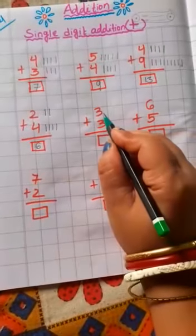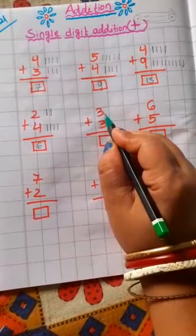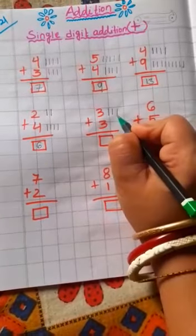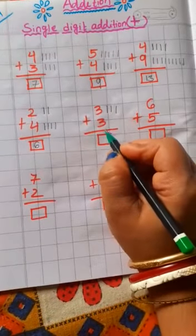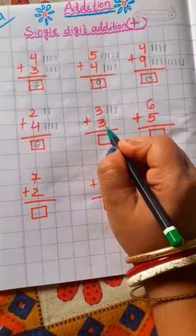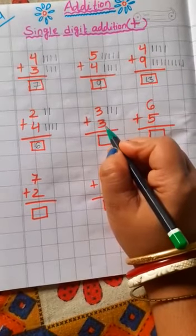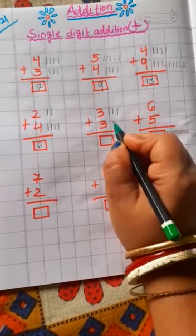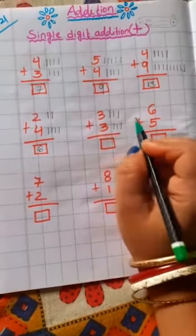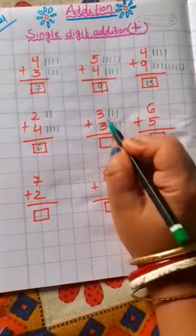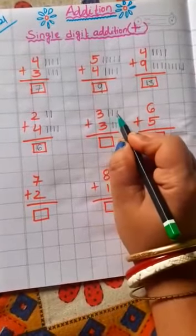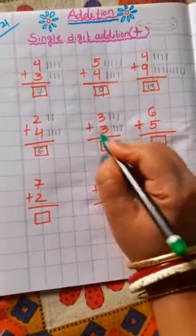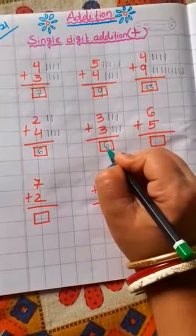Now next number. Children, the first number is 3: 1, 2, 3. And which number is this? This is also 3, so here you also draw 3 lines: 1, 2, 3. Now count all the lines together: 1, 2, 3, 4, 5, 6. Your answer is 6. 3 plus 3 is equal to 6.